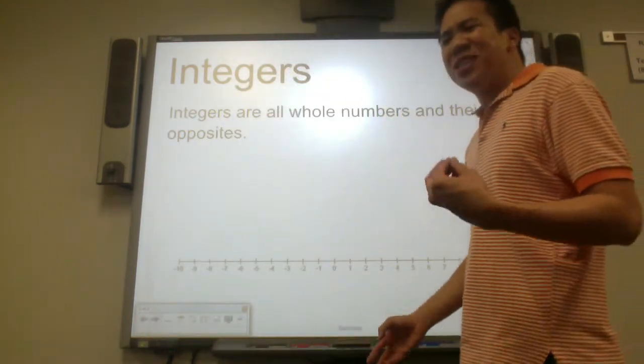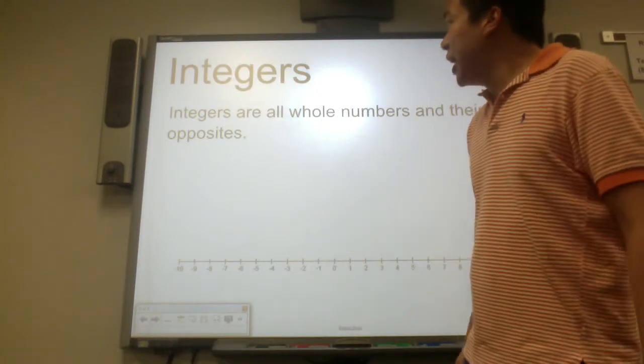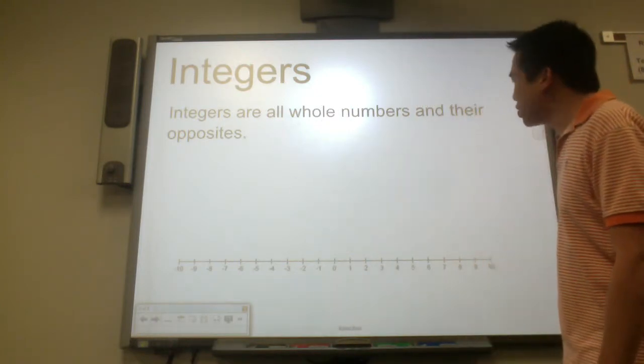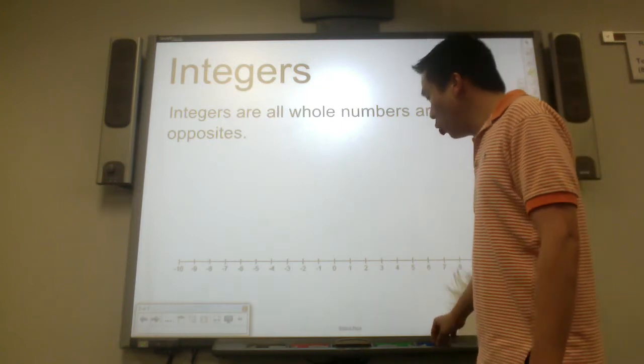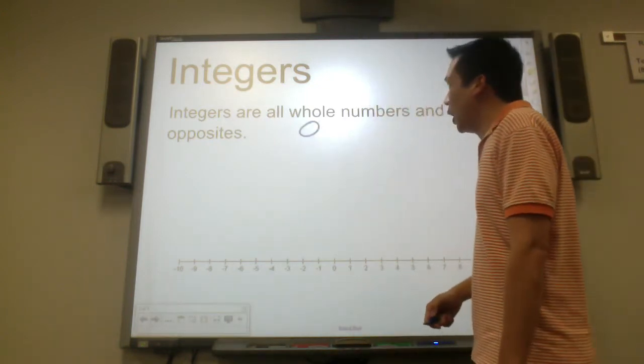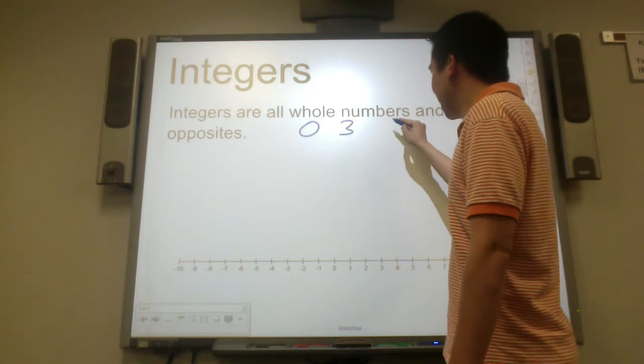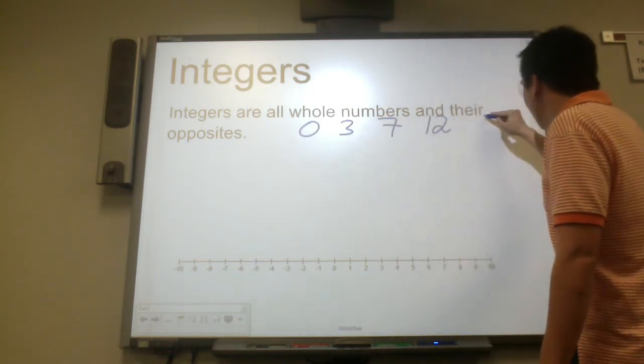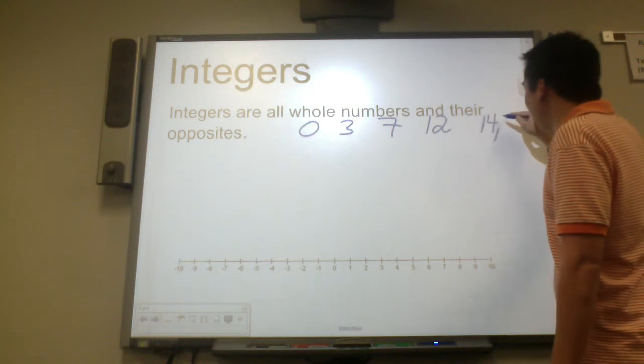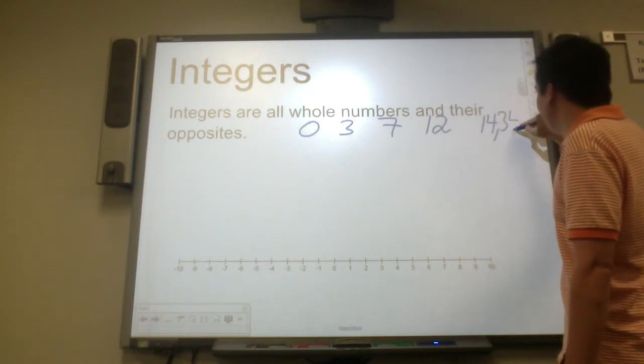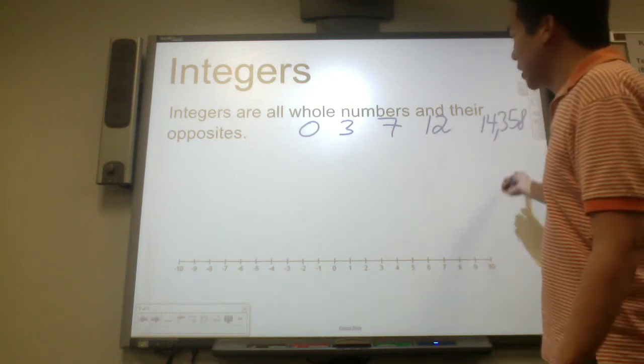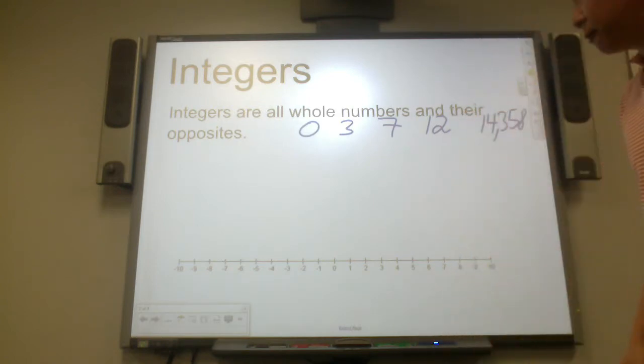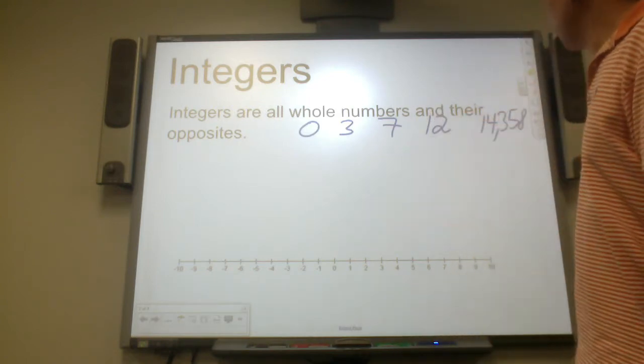So what exactly is the definition of integers? Integers are all whole numbers and their opposites. Whole numbers may include zero, three is a whole number, seven is a whole number, twelve is a whole number, 14,358 is an example of a whole number. But what are the opposites?